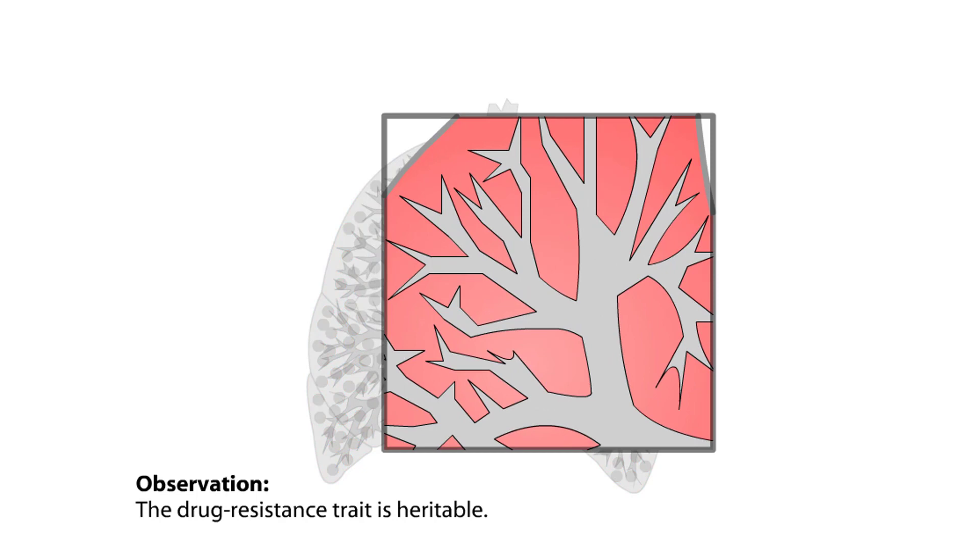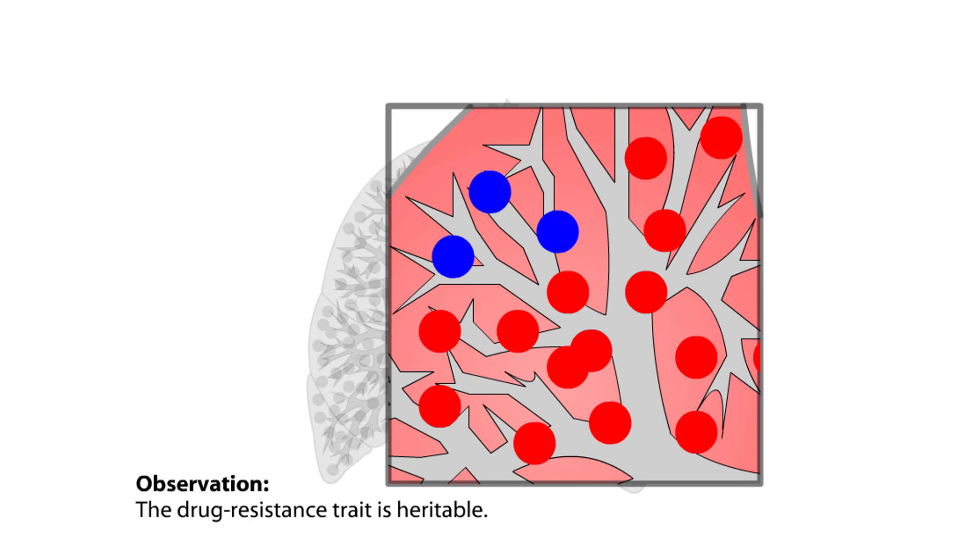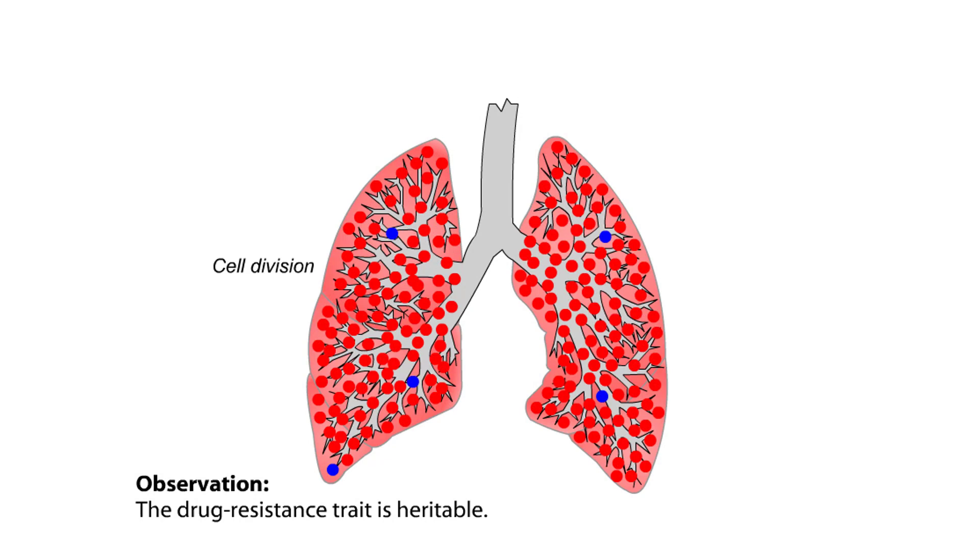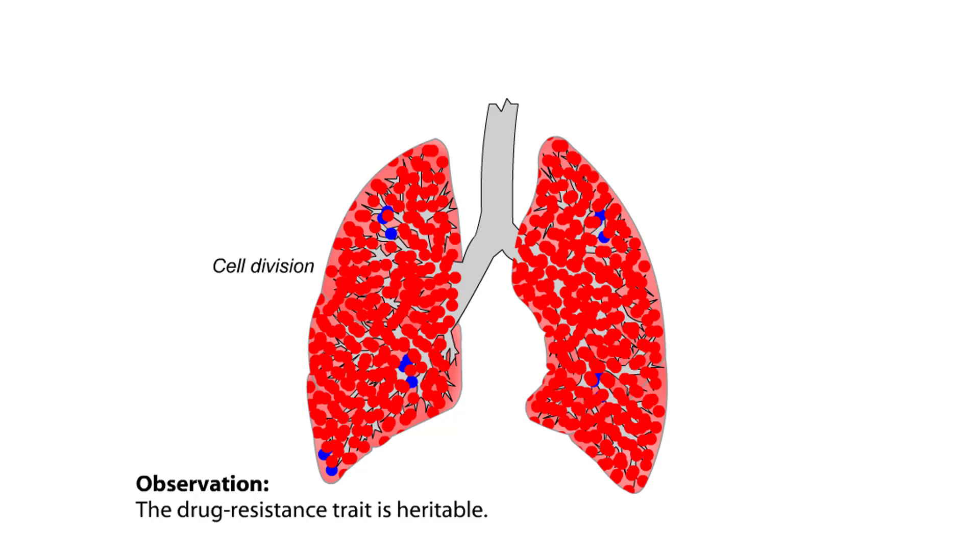If you're an individual infected with the bacterium that causes TB, your lungs represent a single population of the bacteria. Although the lungs contain multiple bacterial colonies, the bacteria are still a single variable population.